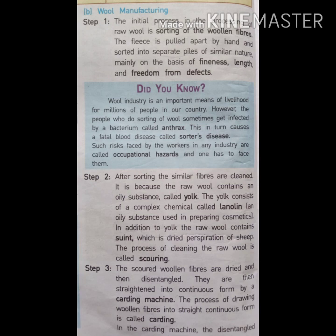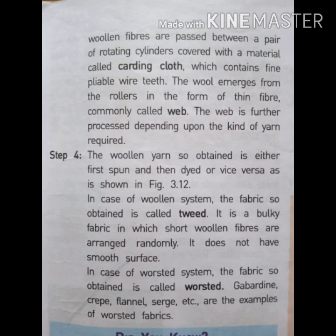The third step: the scoured wool fibers are dried and then straightened into a continuous form by a carding machine. The woolen fibers are passed between a pair of rotating cylinders covered with material called carding cloths, which contain fine pliable wire teeth.